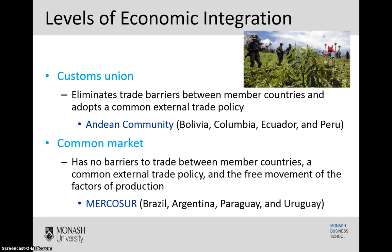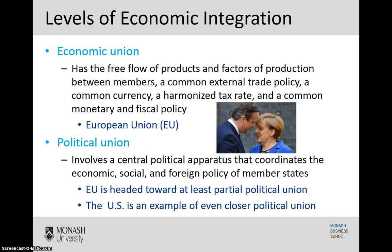You can hopefully already see that each of these levels of economic integration builds on the previous one and simply adds additional layers of requirements. Moving up, the fourth level of economic integration is an economic union. This is where you have the free flow of products and factors of production between members, that common external trade policy, but also now adding a common currency, a harmonised tax rate, and a common monetary and fiscal policy. A good example here is the European Union, which until very recently involved countries like Germany and Great Britain. Of course Germany still remains, but Britain through Brexit has opted to leave.